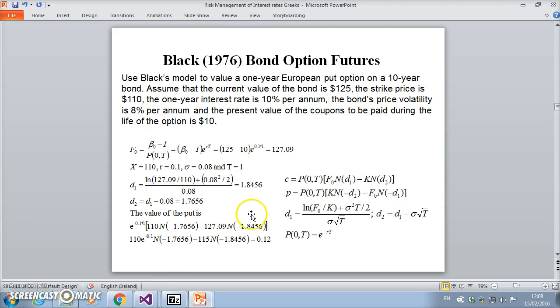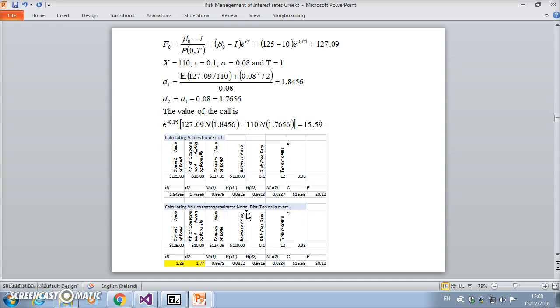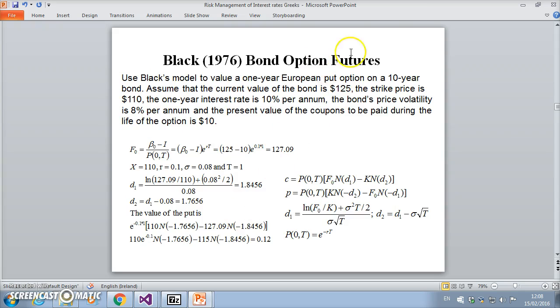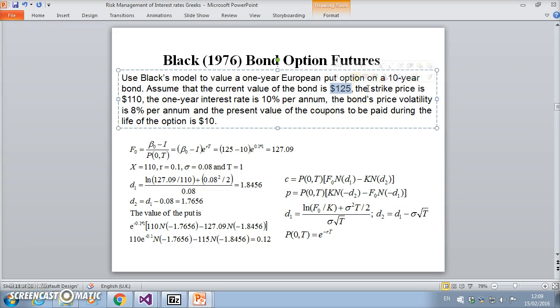We'll take an example of a government bond. We're pricing the bond, and we start off where we're not given the futures price perhaps. We're given the spot price of the bond at 125, strike price K is 110, interest rate 10%, and the bond price volatility is 8% and the present value of the coupons to be paid during the life of the option is $10.